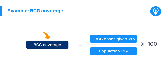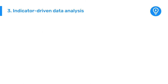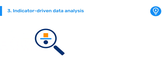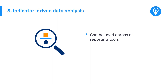BCG doses are taken from routine summary data submitted through our health system, while our population of less than one year is taken from our census. This allows us to calculate our BCG coverage rate. Being able to use population data in the denominator enables comparisons of health performance across geographical areas with different target populations. Indicators represent a powerful data analysis feature that can be used across all reporting tools and are an important output to consider when designing DHIS2 systems.